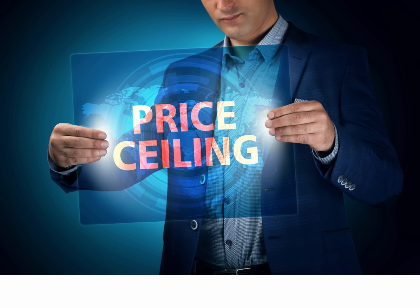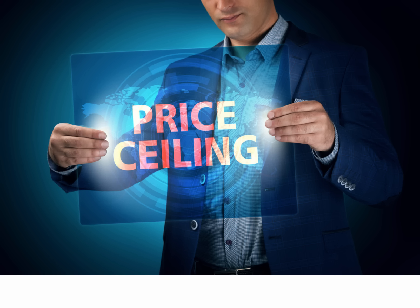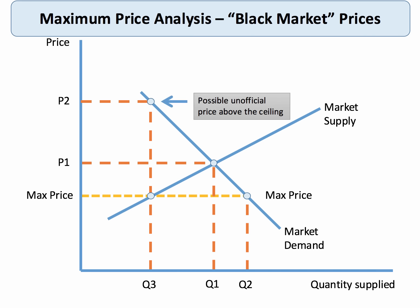Let's take the analysis a little further. Here's our maximum price below the free market equilibrium, creating an excess demand equal to Q2 minus Q3. The key point is that if that is the official maximum price, unofficially if only Q3 is available for consumption, there are some consumers willing and able to pay price P2 — which is much higher than the maximum price. So you could get the emergence of an unofficial or shadow price above the ceiling.